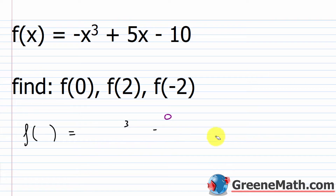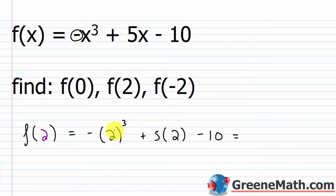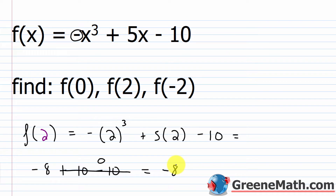What if we did f of 2? Same concept — I'm going to replace every x with a 2. So negative 2 cubed plus 5 times 2 minus 10. Notice the negative is not inside the parentheses, it's outside. So 2 cubed is 8, the opposite of that is negative 8, then plus 5 times 2 which is 10, then minus 10. Since 10 minus 10 is 0, we're left with just negative 8. So f of 2 is negative 8.